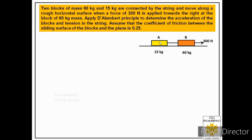We are given two blocks: block A of 15 kilogram and block B of 60 kilogram, connected by a string. They move along a rough horizontal surface and a pull of 300 newtons is applied at block B towards the right. We have to find the acceleration of both blocks and the tension in the string. The coefficient of friction between the blocks and the surface is 0.25.